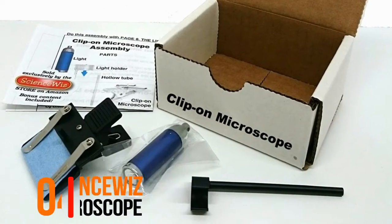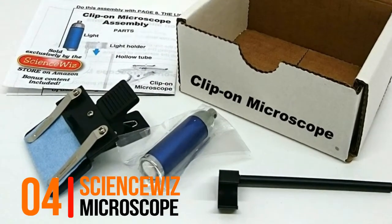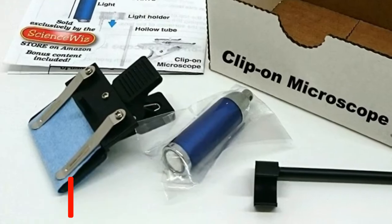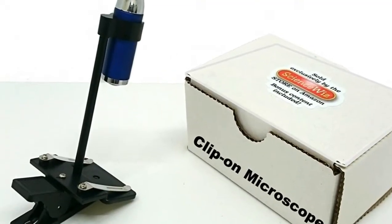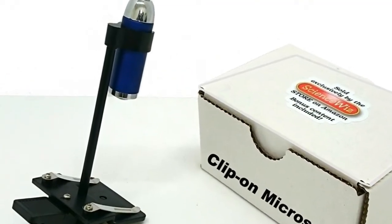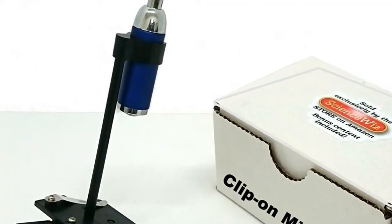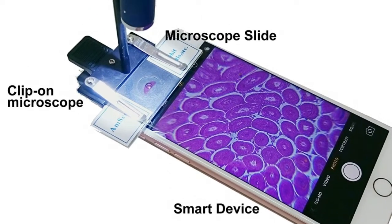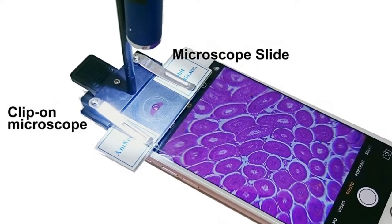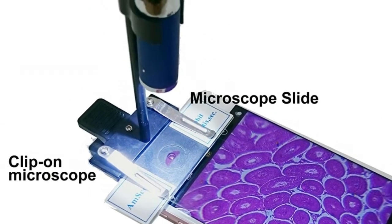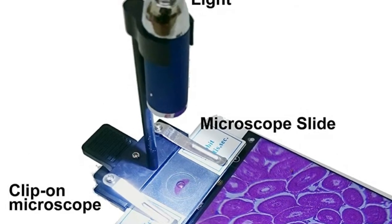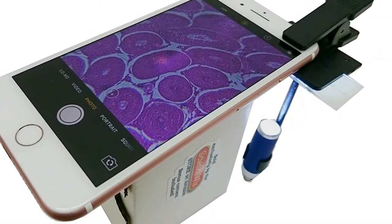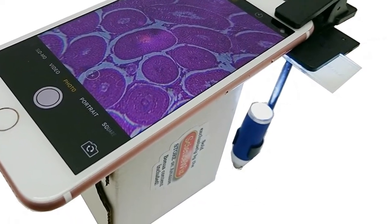Number 4, ScienceWiz Microscope. Autofocusing and compatible with both cell phone cameras and tablets. Large working distance allows you to observe as you scan your own slides. Industrial grade, scratch resistant coated lens, works with standard pre-made or web mount microscope slides.